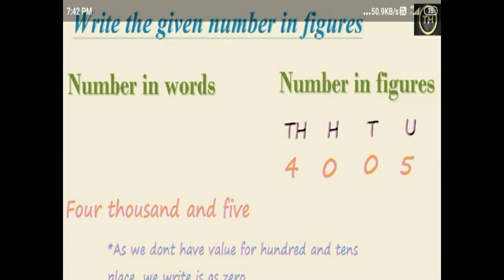Write the given number in figures: 4, 0, 0, 5. What is the place of four? Thousand place. What is the place of zero? Hundred place. What is the place of zero? Tens place. What is the place of five? Unit place, or ones place. How to read this number? Yes — four thousand and five.